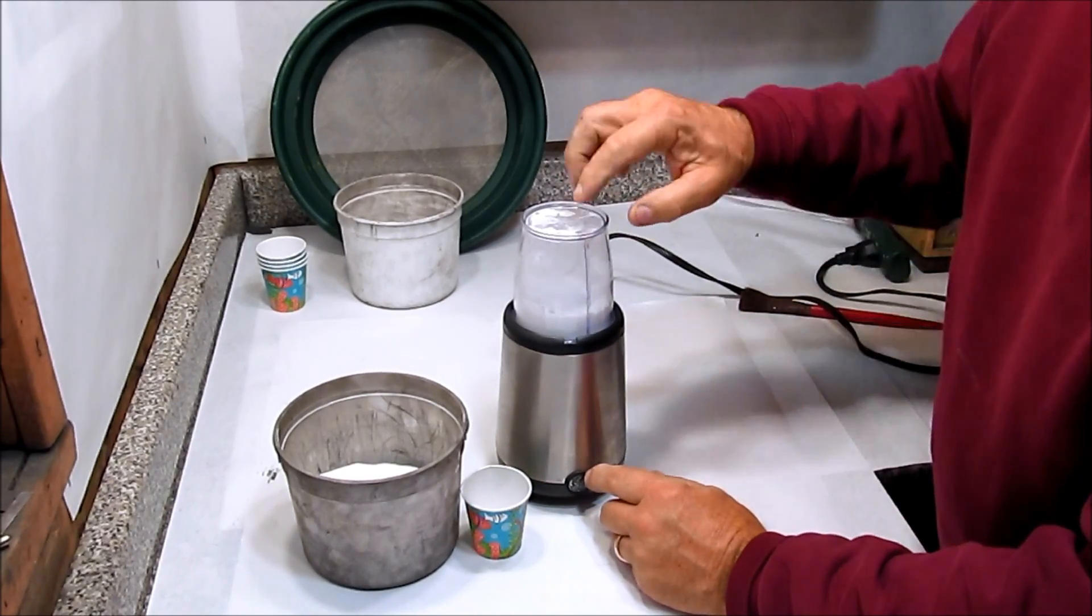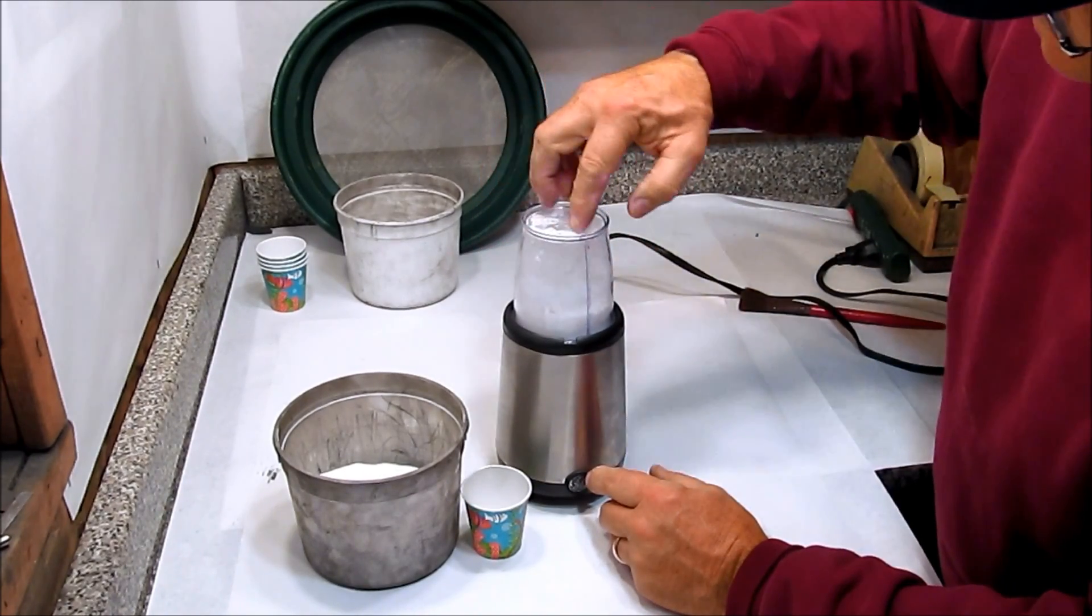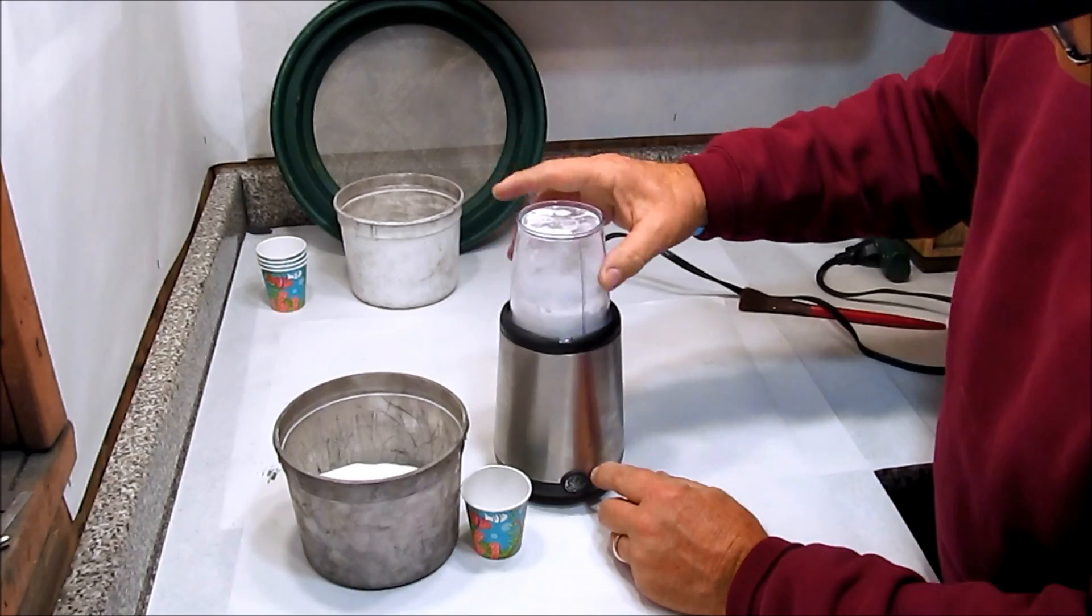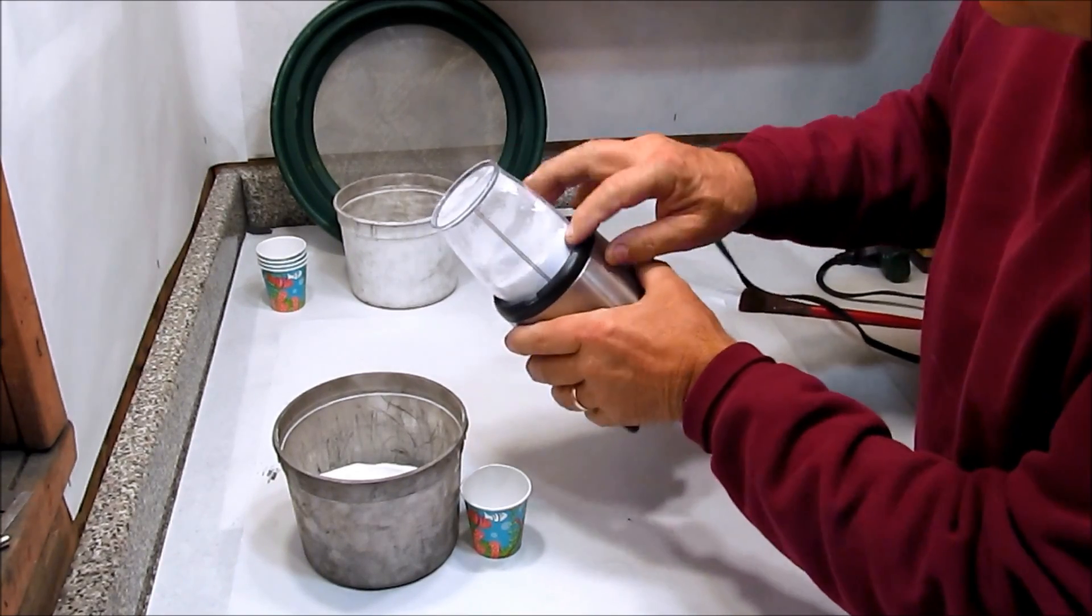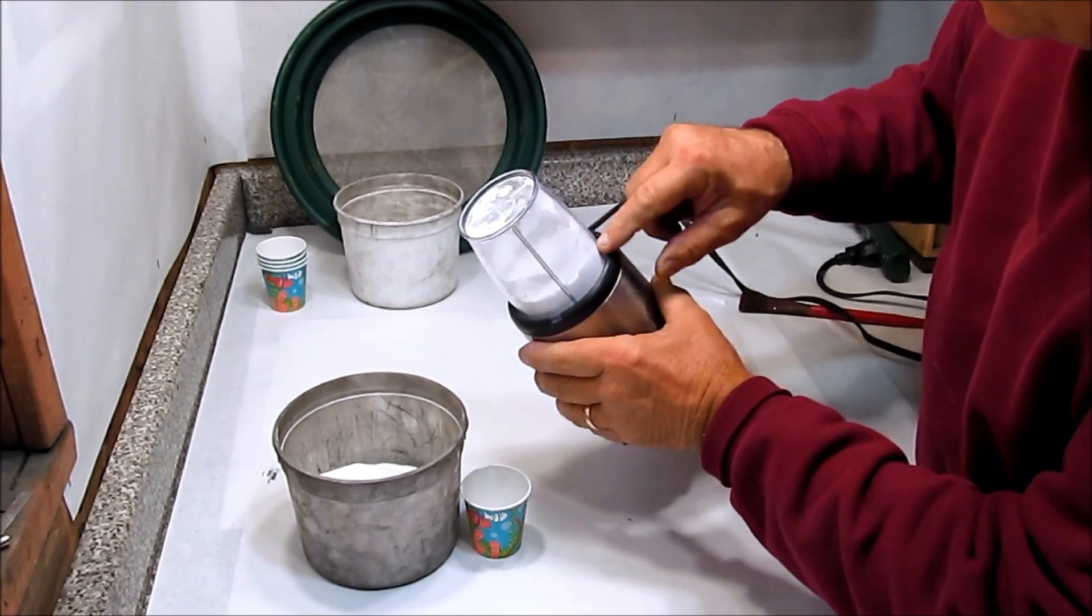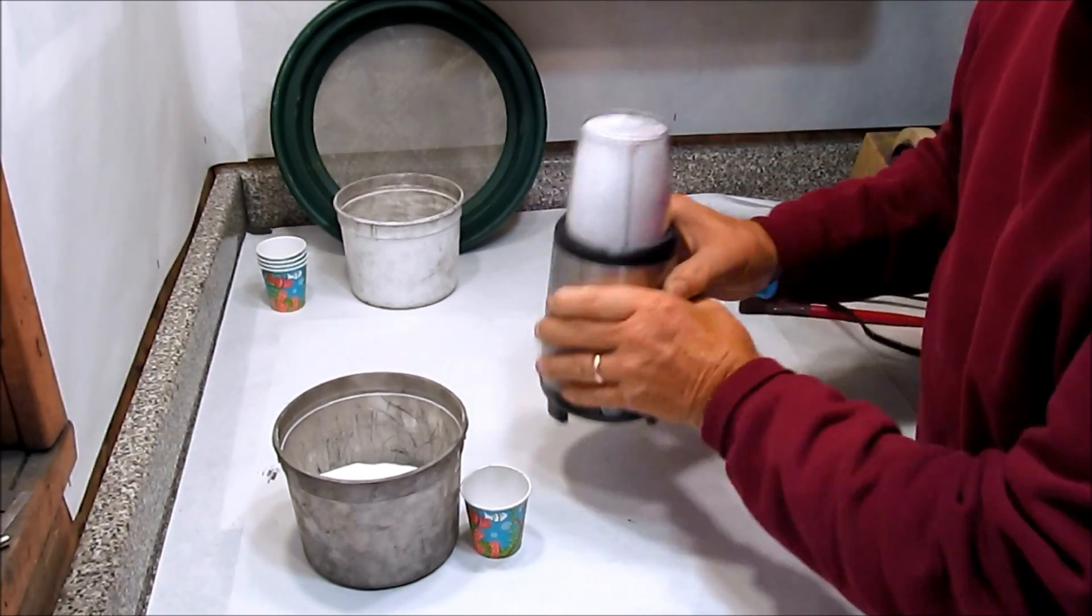I can tell when this is getting fine. Some of it starts to cling to the inside of the container and it starts to fluff up and just look a lot finer and whiter in there.